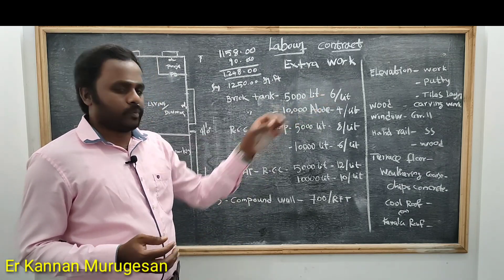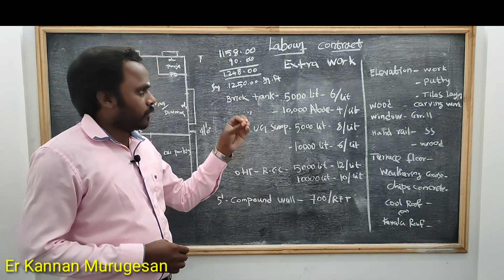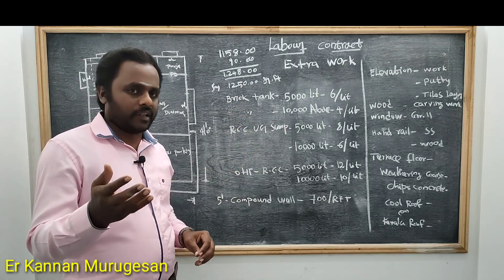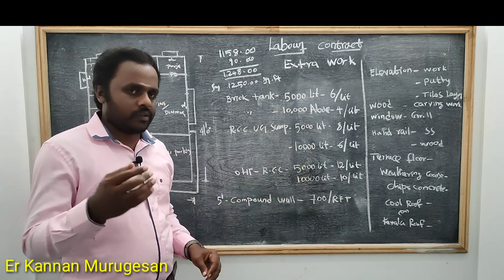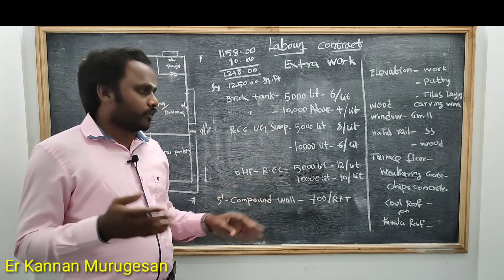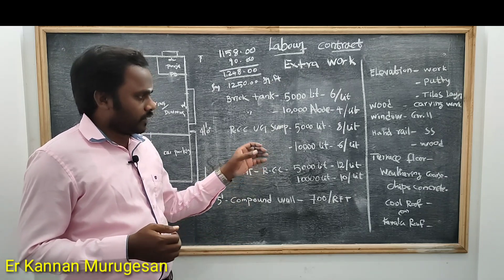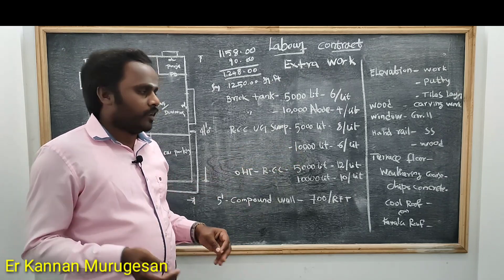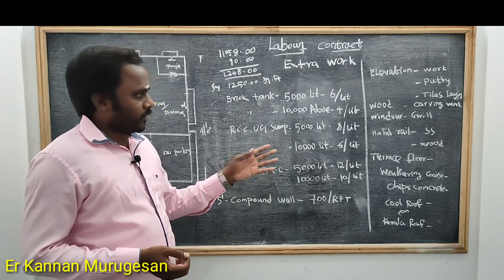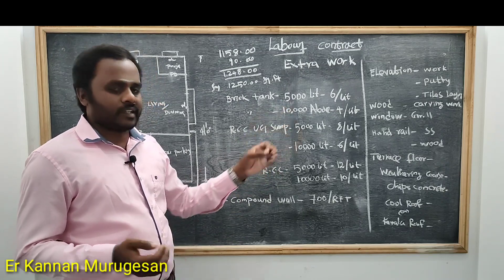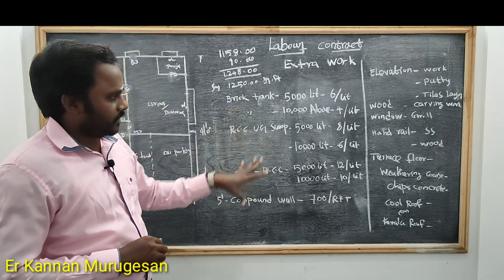This is a rate for 6,000. This is the rate for 10,000. So let's try this. If we can do this, we can do this again.